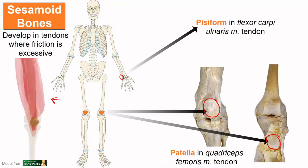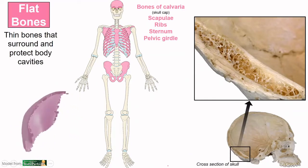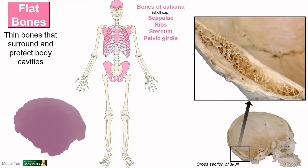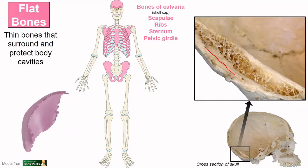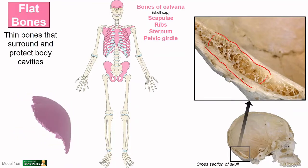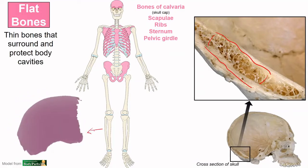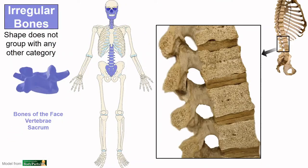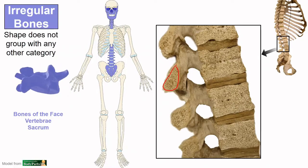Flat bones have more of a plate-like structure — broad, thin, and can have curvature to them, like those of the skull. Flat bones have two plates of compact bone surrounding an inner core of spongy bone sandwiched in the middle. The parietal bone is one of the large flat bones of the skull. Vertebrae and some bones of the face defy categories, so they're in their own irregular category. However, we do see that in a cross-section of a vertebra, the outer compact bone and inner spongy bone persists.